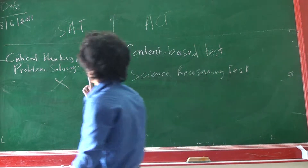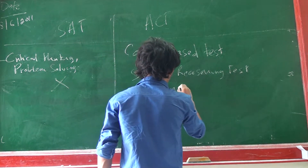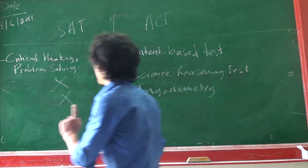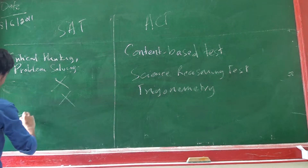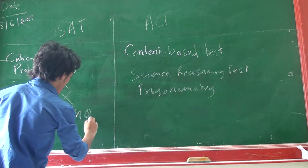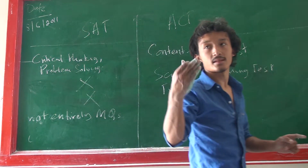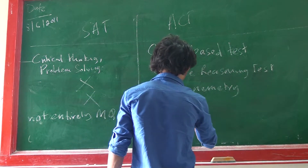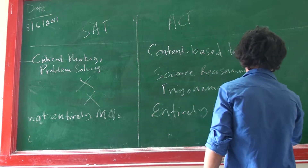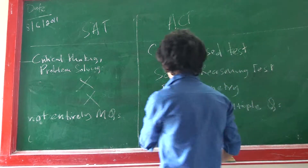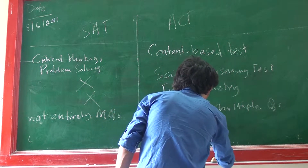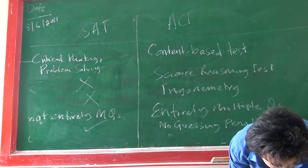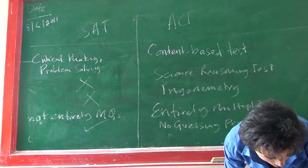ACT math includes trigonometry, but you don't have that here. SAT is not entirely multiple-choice, because you will have grid-in problems in math which are not multiple-choice. But ACT is entirely multiple-choice. And here you will have no guessing penalty, but with ACT you will have one. ACT tests your English grammar; the SAT does not.